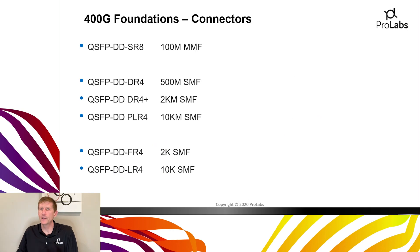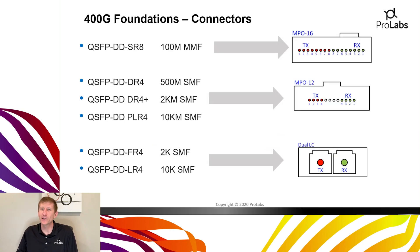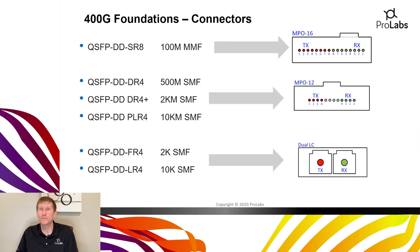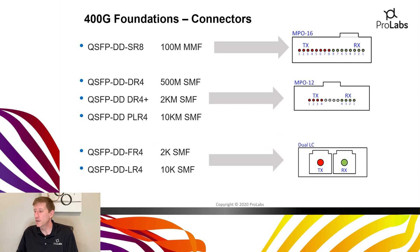Connectors are a big deal with QSFP28DD. Looking at the rest of the 400Gig transceivers: the SR8 uses the MPO-16 with eight transmit and eight receive pairs. The DR4, DR4 Plus, and PLR4 use the MPO-12 with four transmit and receive pairs — very similar to the scheme used in QSFP Plus and QSFP28 modules. The QSFP-DD FR4 and LR4 use duplex LC connectors — standard LC connectors.